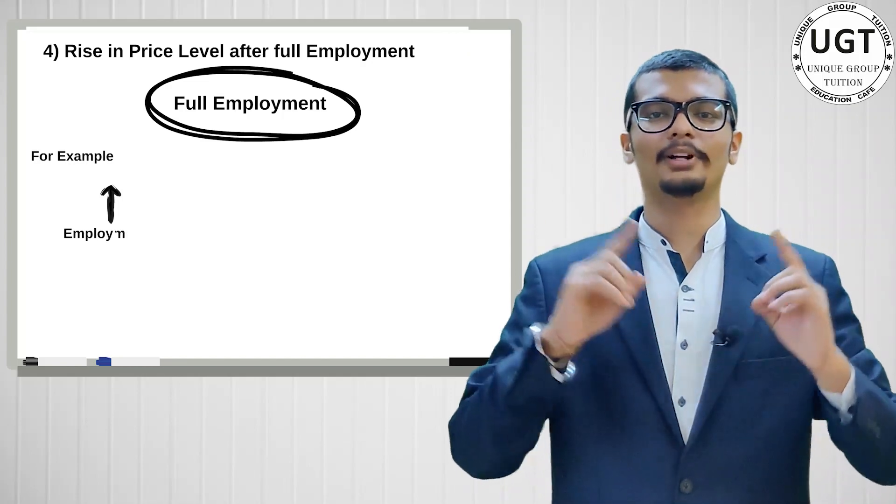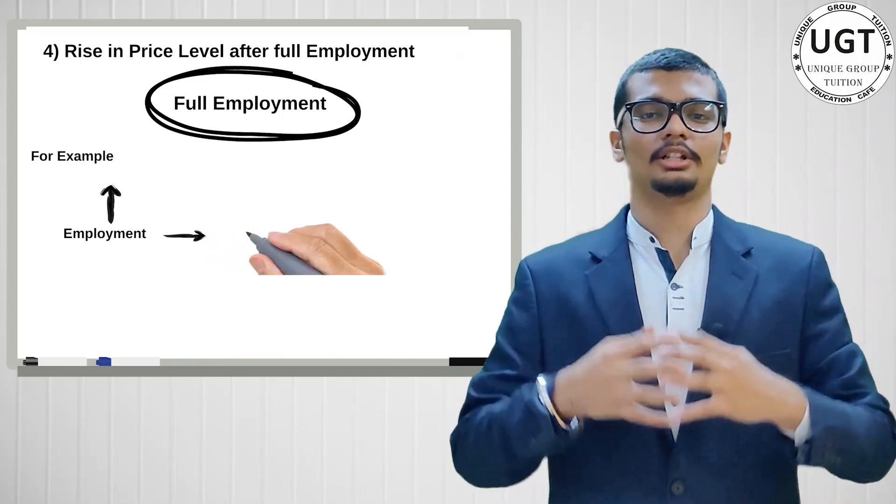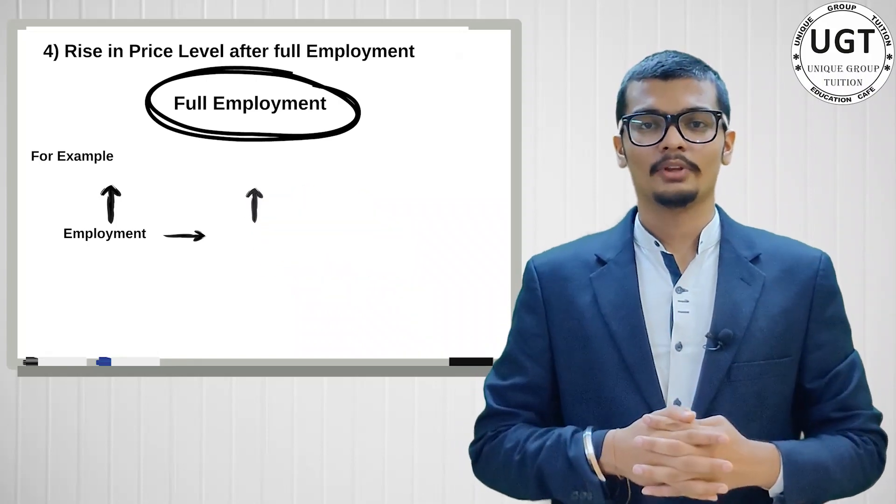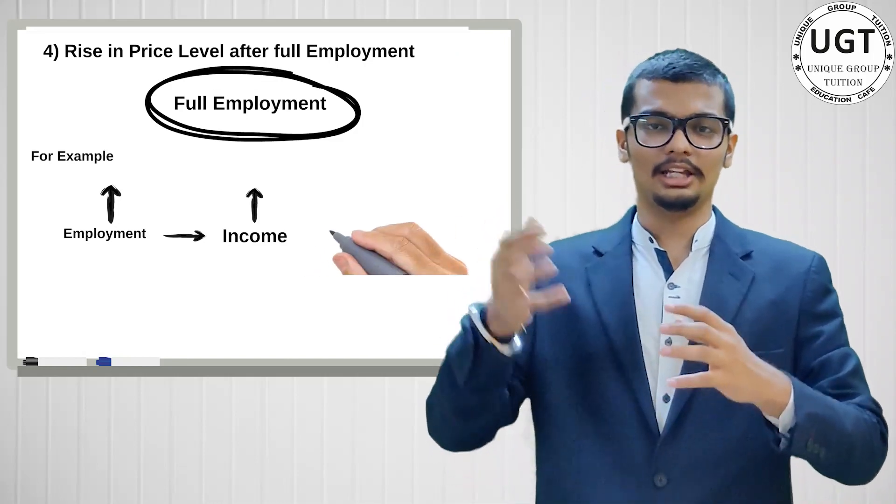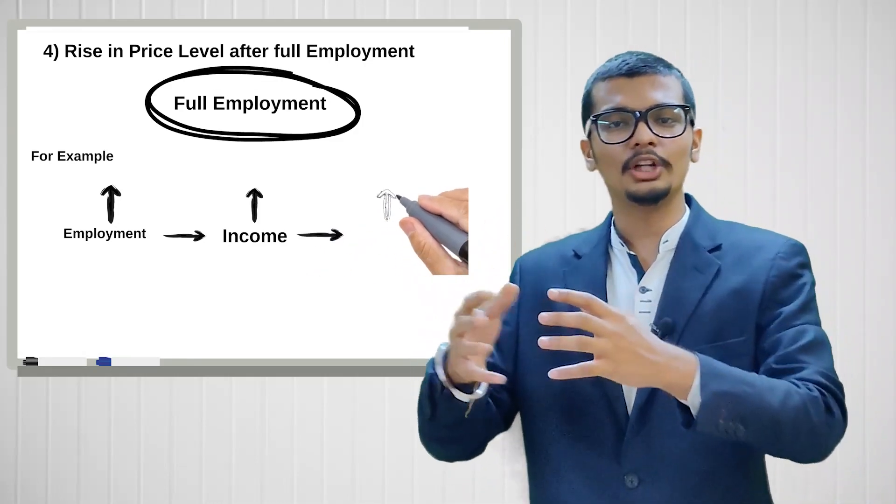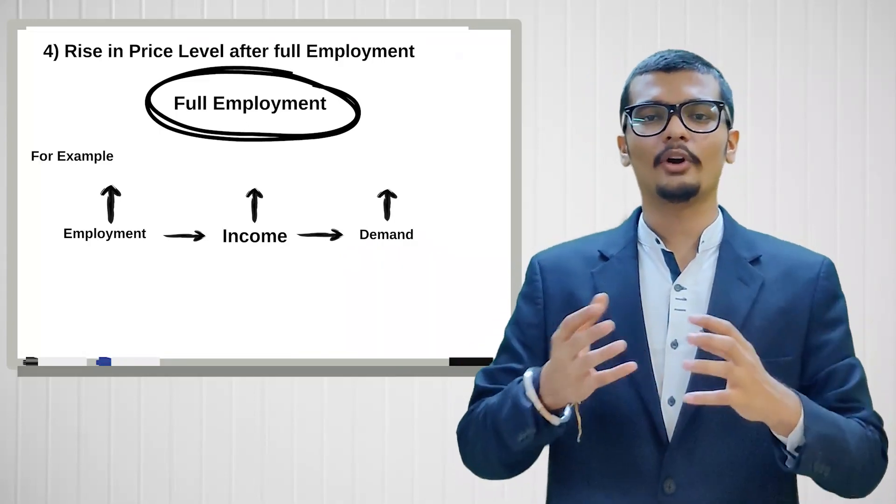Characteristic 4: rise in price level after full employment. Let me summarize - point number one, constant rise in price level. Point number two, price rise in all sectors of economy. Point number three, purchasing power decreases. Point number four, rise in price level after full employment is inflation.